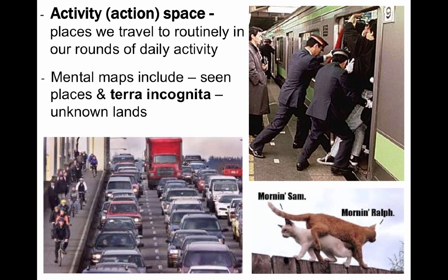Our mental maps can therefore include places we have actually seen and visited, but also terra incognita, which are the unknown lands and places we wouldn't likely have access to. You may pass by homes, businesses, schools, and other private lands, but you have clearly not actually visited all those places.